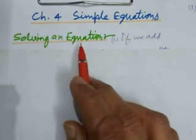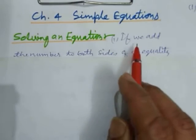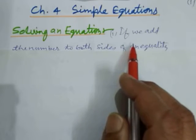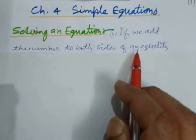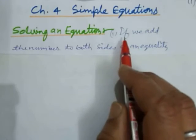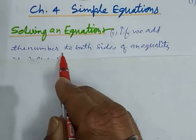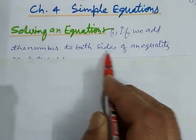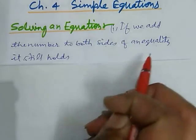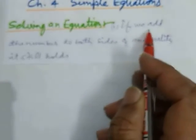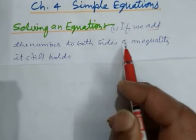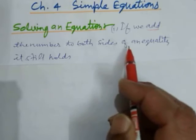Now we learn how an equation is solved. First we learn some steps which we have to perform to solve an equation. First, if we add the same number to both sides of an equality, it still holds — that is, the equality does not change. By adding something, we can change an equation to separate the variables.